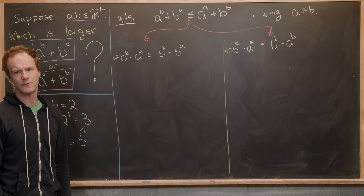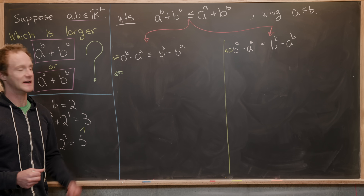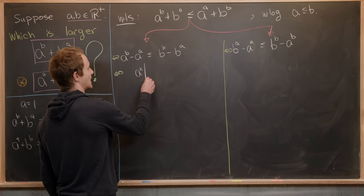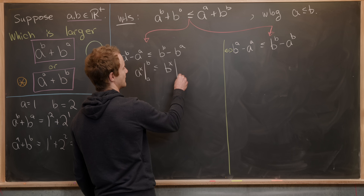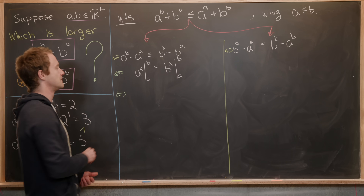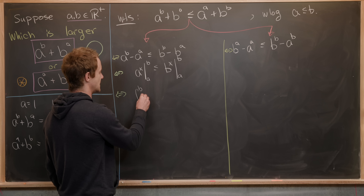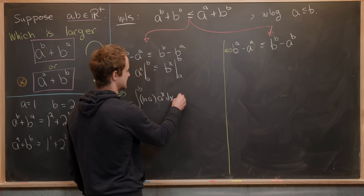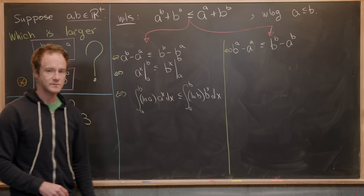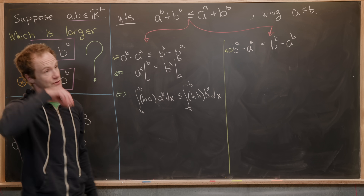Let's jump down the left branch. This looks like we've taken an integral and evaluated it between two points — specifically A to the X evaluated from A to B, and B to the X evaluated from A to B. Taking the derivative with respect to X on both sides turns this into: the integral from A to B of ln(A) times A to the X dx is less than or equal to the integral from A to B of ln(B) times B to the X dx. This is equivalent to our goal inequality.